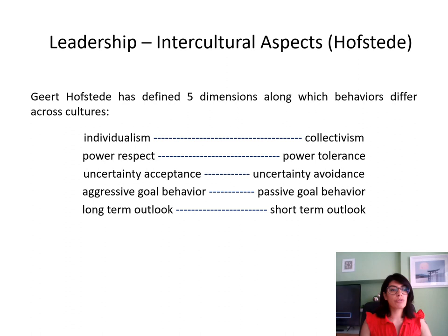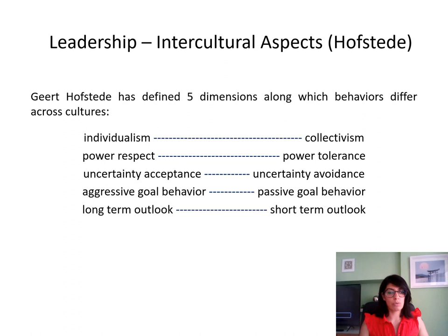You'll remember that we talked about the intercultural aspects of leadership from Hofstede, and I asked you to think about how these five dimensions are represented in your culture. Is your culture more individualistic or collectivist? Is there more respect of power or tolerance of power? Is uncertainty accepted or is it avoided? Is there aggressive behaviour towards a goal or passive behaviour? And when people plan, do they plan long term or short term?